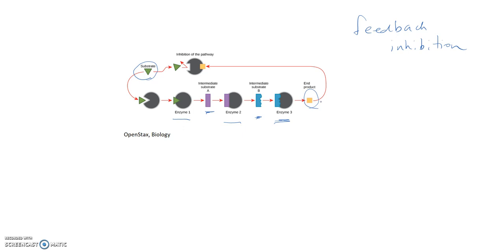Feedback inhibition is when the end product of the pathway inhibits an enzyme in the pathway. The end product binds to the first enzyme and causes it to change its shape so it can no longer bind the substrate, thereby inhibiting the pathway. This makes sense because the cell is expending energy to produce this product — why produce it when it's not needed? When there's an excess of product, it essentially shuts off the pathway so no more product is made. However, when the product is depleted and there's not enough around to bind the enzyme, the pathway begins to go forward again and produces more of that product.